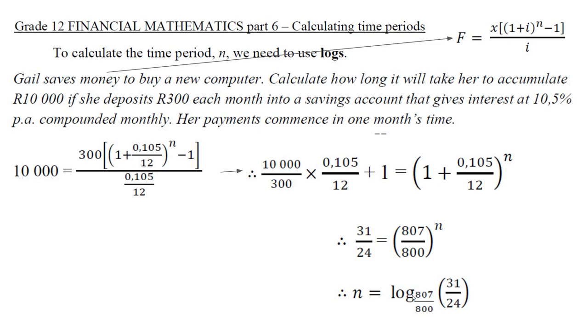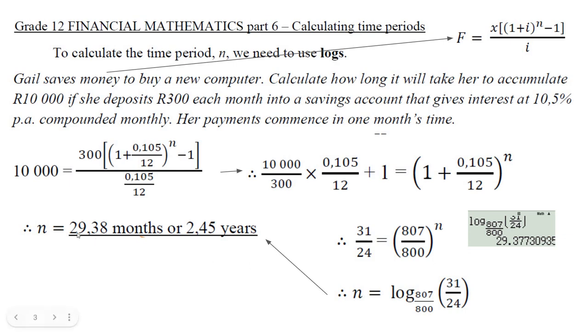And it turns out that n is, and see how I typed that into my calculator? I got 29.377. I'm going to round it off to 29.38 months. She will have accumulated that.